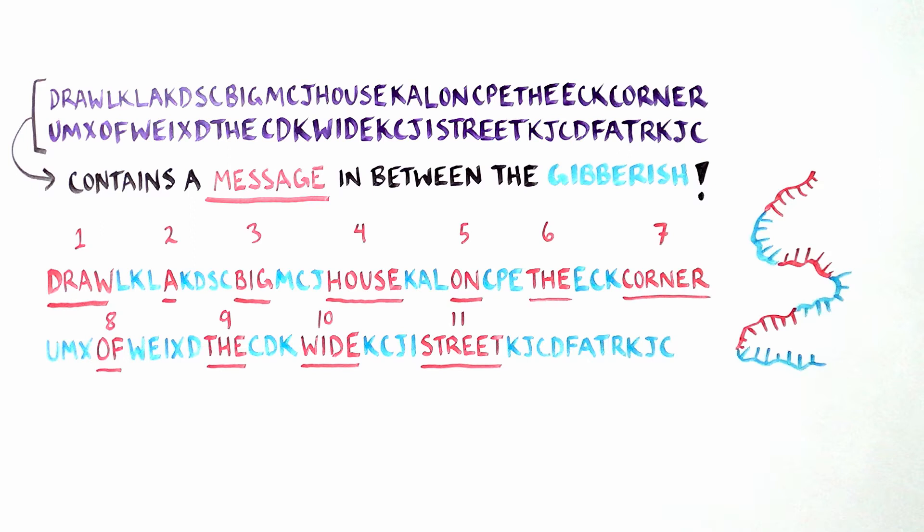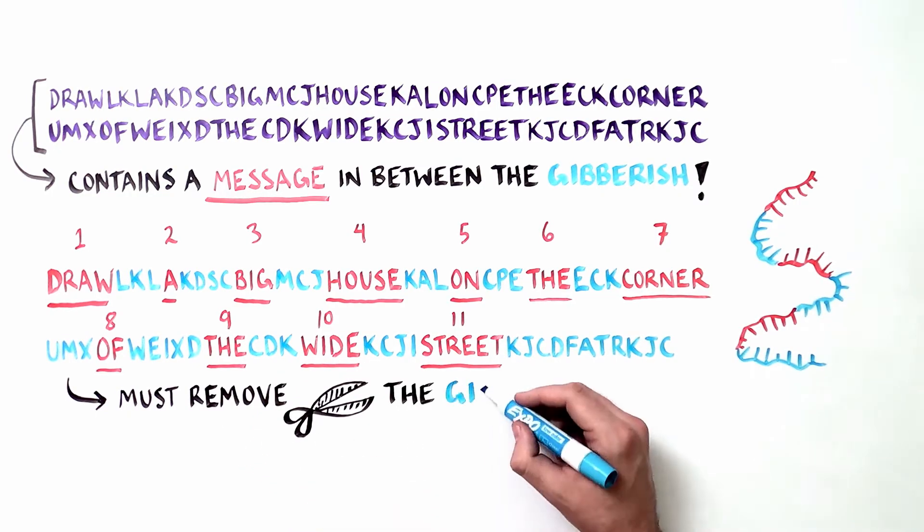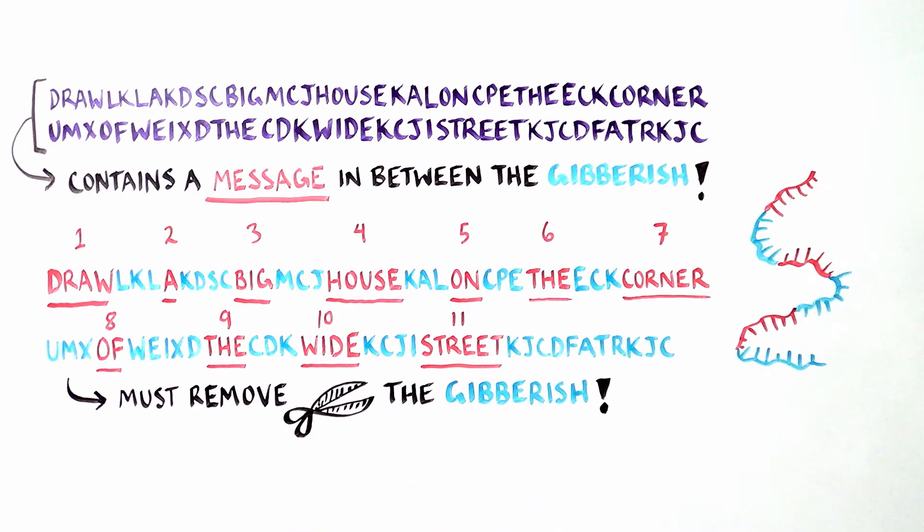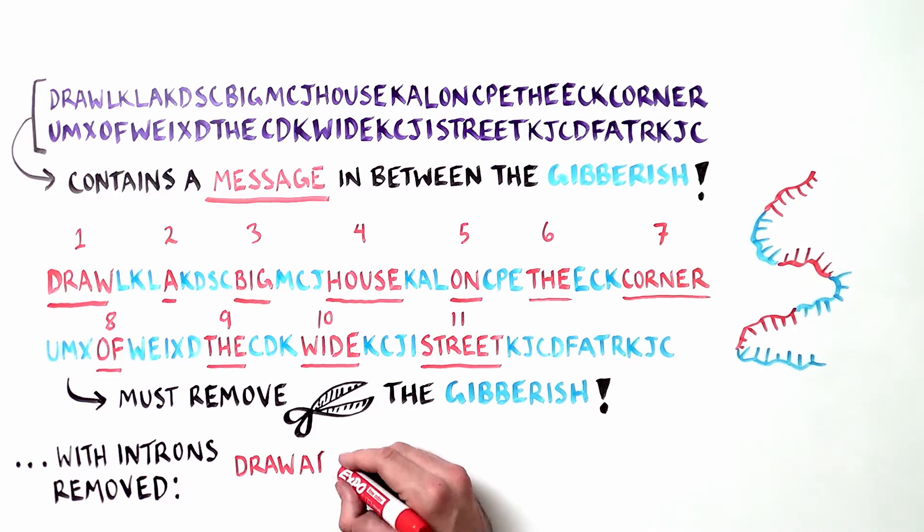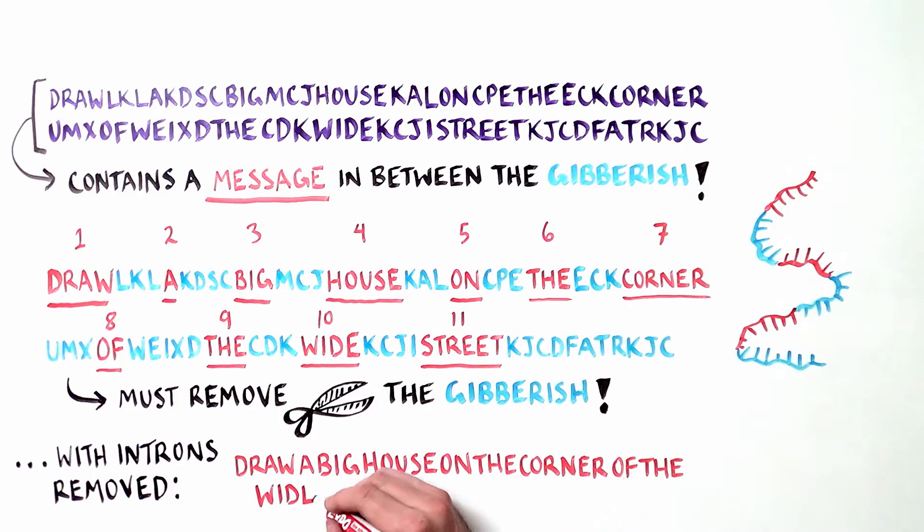In this case, the RNA message is made up of 11 exons. As the introns are cut out, the exons are pasted together to form what biologists call a mature messenger RNA. The message now contains only those letters necessary to make a protein, or in our analogy, a meaningful sentence with 11 words or exons: Draw a big house on the corner of the wide street.